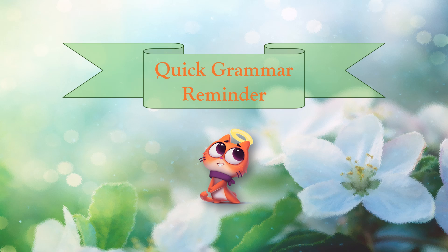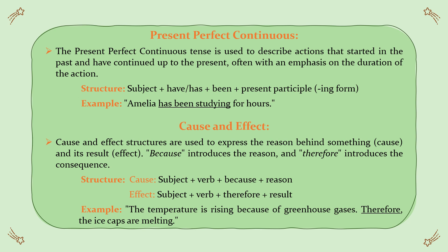Quick grammar reminder. Let's carefully examine the grammar points before moving on to the conversation scene. Present perfect continuous: this tense is used to describe actions that started in the past and have continued up to the present, often with an emphasis on the duration of the action. Structure: subject + have/has + been + present participle. Example: Amelia has been studying for hours.